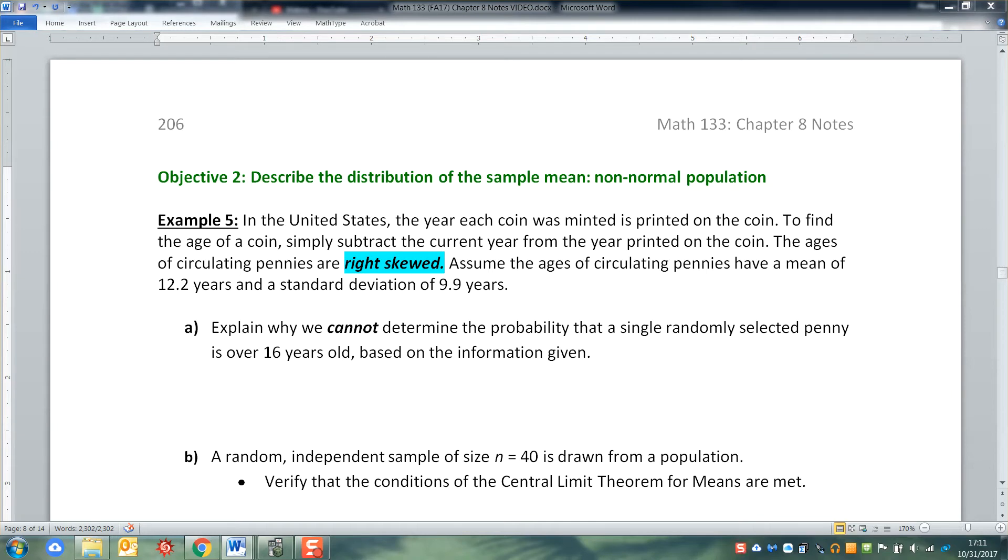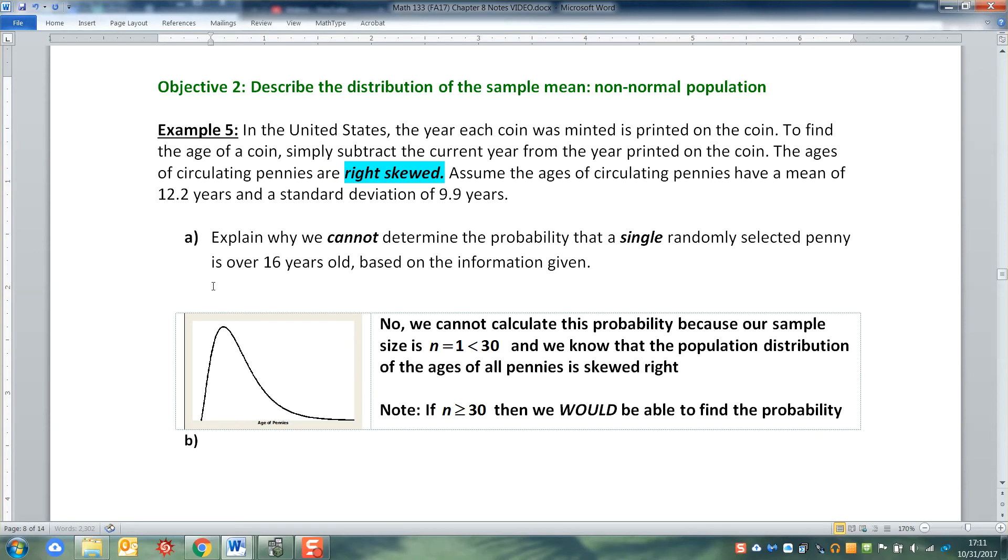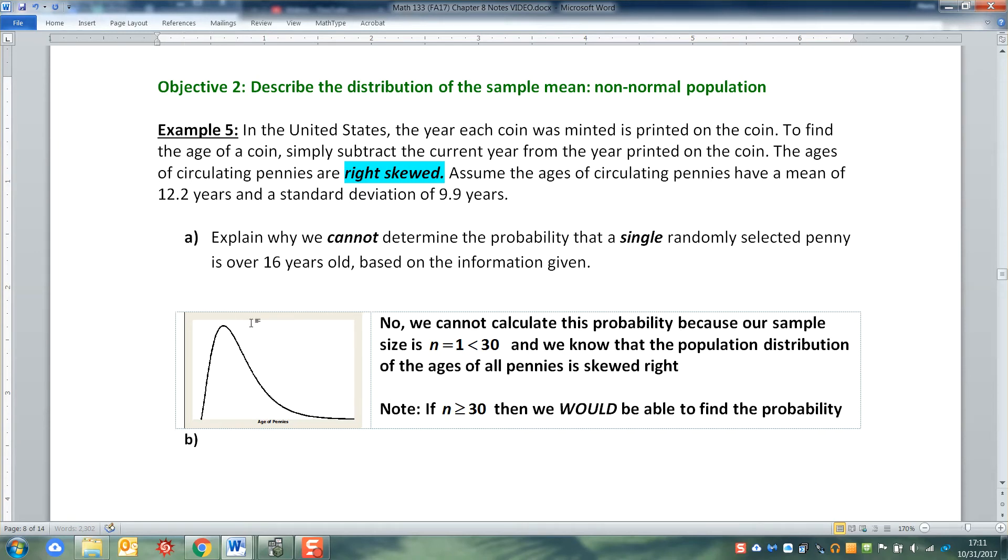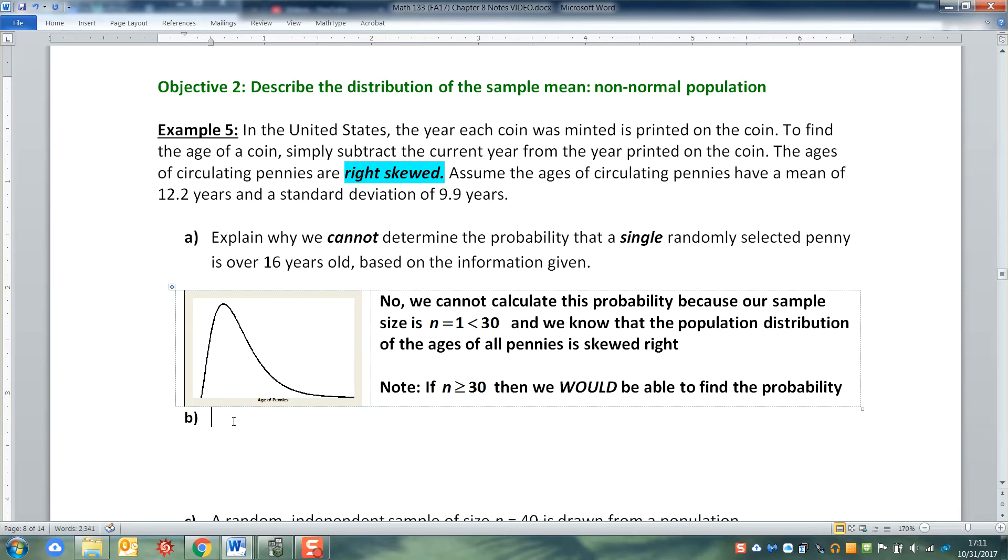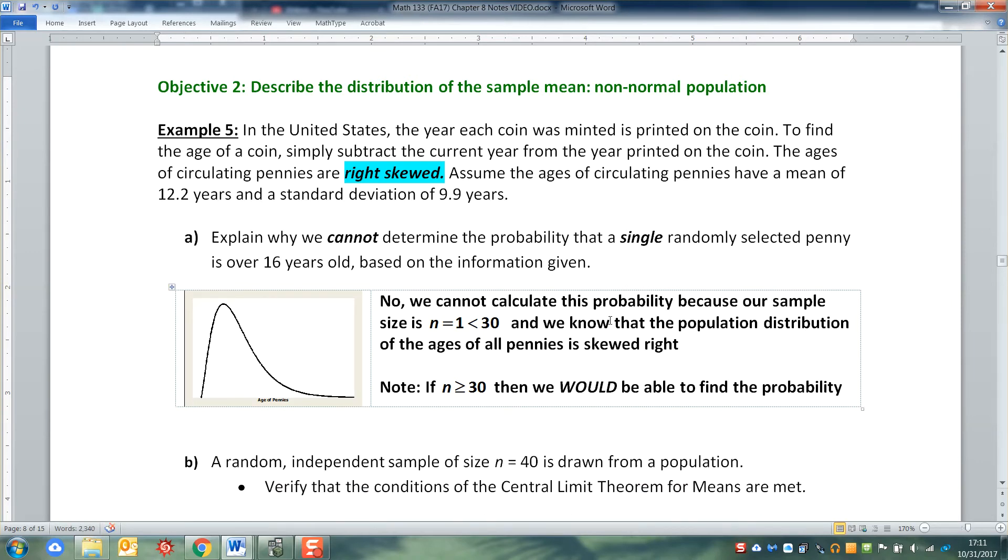We know the standard deviation and the mean. We know the mean is 12.2, we know the standard deviation is 9.9. But we're in trouble because we cannot determine the probability of a single penny. And the key in there is the word single. We're talking about one randomly selected penny because that is not a large enough sample size to overcome the skewing. It's skewed, the age of pennies makes this kind of shape. And having a sample size of one is less than 30, so we can't find this probability.